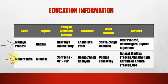The next state is Maharashtra. The capital of Maharashtra is Mumbai. The party to which the CM belongs is Shiv Sena, CPI and NCP. The governor is Bhagat Singh Koshyari. The borders are Gujarat, Madhya Pradesh, Chhattisgarh, Karnataka, Andhra Pradesh and Goa.